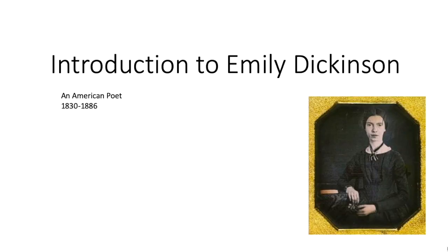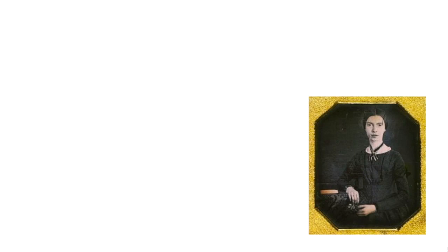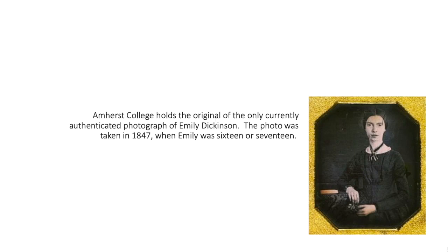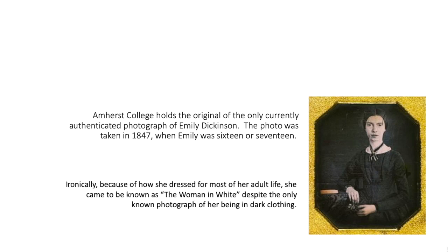We're going to take a few minutes for an introduction to Emily Dickinson, as well as the place where she was born, lived, and died. Emily was born in 1830 and died in 1886. This is the only known, 100% authenticated photograph of Emily Dickinson, taken in 1847 when she was 16 or 17. There are a couple of paintings of her as a child, but no authenticated photo after 1847. Ironically, because of how she dressed for most of her adult life, she came to be known as the woman in white — though many people picture her in black because of this famous photo.